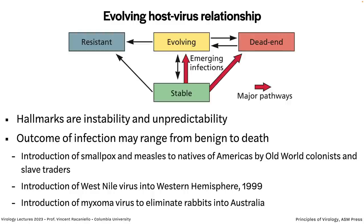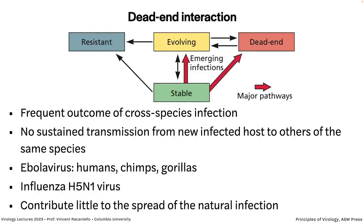When colonists came from Europe, they brought smallpox and measles viruses — those had originated in Europe and weren't in the Americas. They wiped out millions of people who had no immunity. Another example: West Nile coming to the Western Hemisphere in 1999 — it had existed in Africa and never made it to the Western Hemisphere, then suddenly did and spread unchecked across the U.S. And myxoma virus was introduced on purpose to try to eliminate rabbits in Australia, which initially worked but not completely.